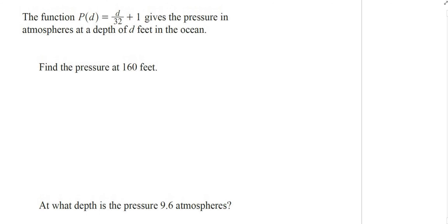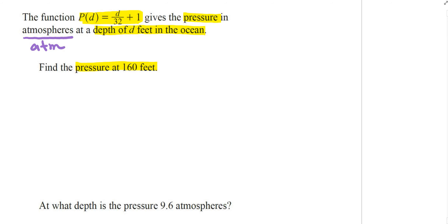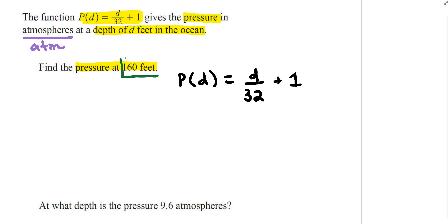Now for question 17, I'm given a function P(D) = D/32 + 1, which gives the pressure of the atmosphere at a given depth in feet in the ocean. This problem deals with pressure and depth. I need to find the pressure at 160 feet. Pressure is measured in atmospheres (ATM). For these problems, you just need to know where to plug in the numbers — the depth is 160 feet.